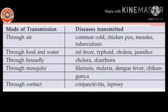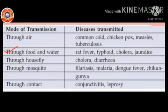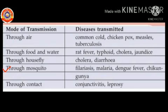Now let's discuss some modes of transmission of diseases. Diseases transmitted through air include common cold, chickenpox, measles, and tuberculosis. Diseases transmitted through food and water include rat fever, typhoid, cholera, and jaundice. Diseases transmitted by houseflies include cholera and diarrhea.